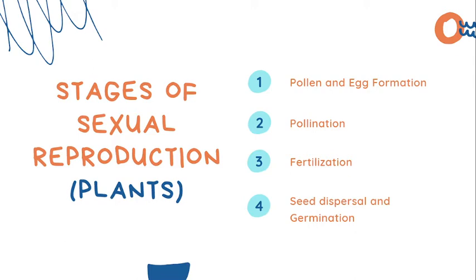Now let's go to the stages of sexual reproduction in plants. We have four stages and we'll go through each one. Number one is pollen and egg formation. Number two is pollination. Three, fertilization. And lastly, seed dispersal and germination.